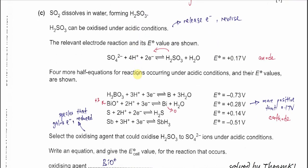Part C: SO₂ dissolves in water forming H₂SO₃, and H₂SO₃ can be oxidised under acidic conditions. When a substance is oxidised, it releases electrons — this is a very important concept. The relevant electrode reaction involving H₂SO₃ is given. Since H₂SO₃ is being oxidised, this half-equation goes in the reverse direction, releasing electrons and ultimately forming sulfate. The standard electrode potential is given for this reaction.